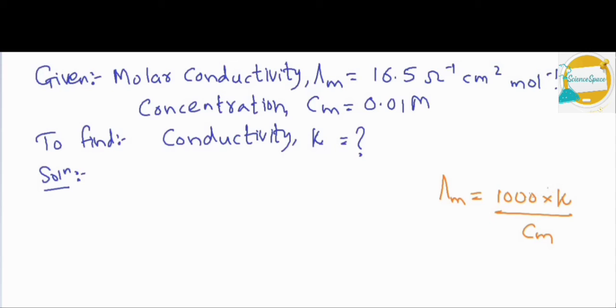Here we have to find the conductivity value kappa. So when we shift 1000 and cm on the left-hand side, this formula is modified to get lambda m times cm upon 1000. This is a modified formula for conductivity of solution.